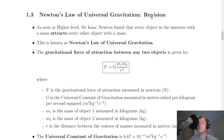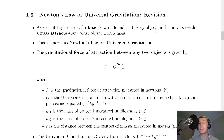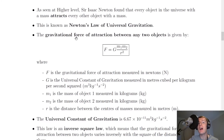This is revision because you should have done this in the Higher Physics course. As seen at higher level, Sir Isaac Newton found that every object in the universe with a mass attracts every other object with a mass. This is known as Newton's Law of Universal Gravitation, and we represent the gravitational force of attraction between any two objects with this equation here.